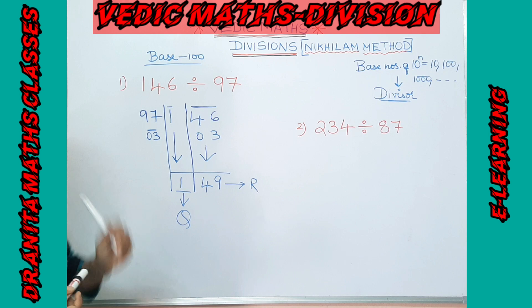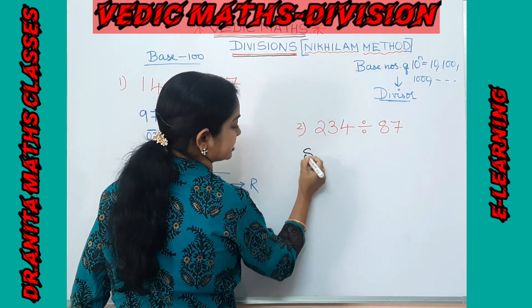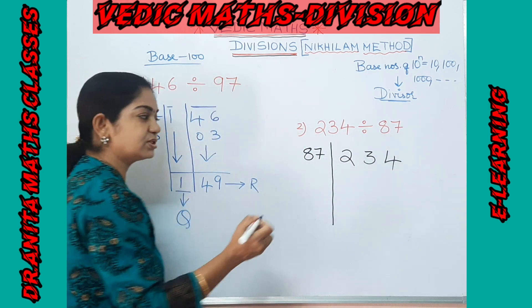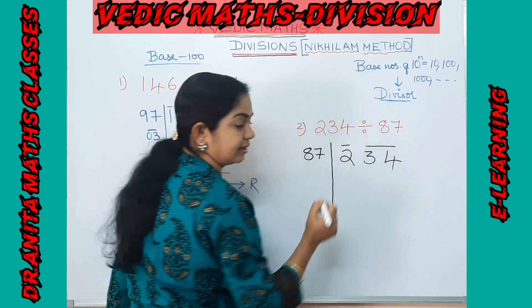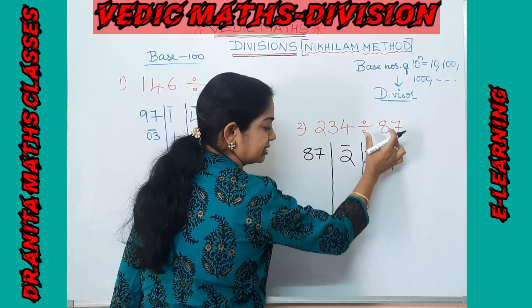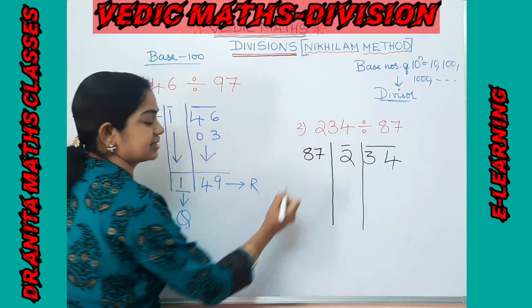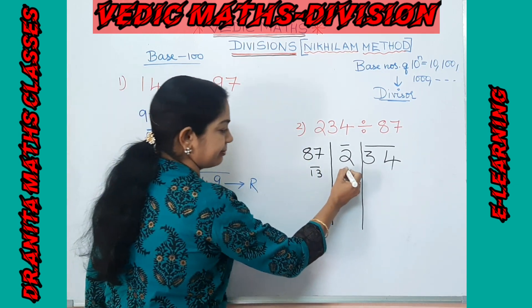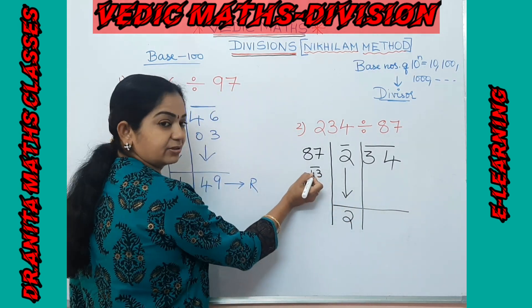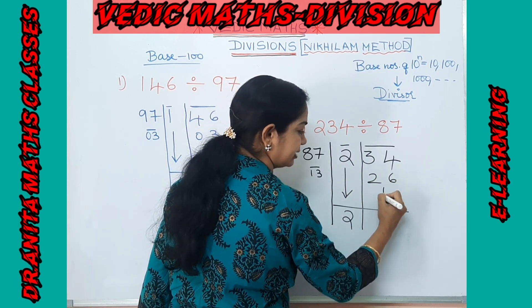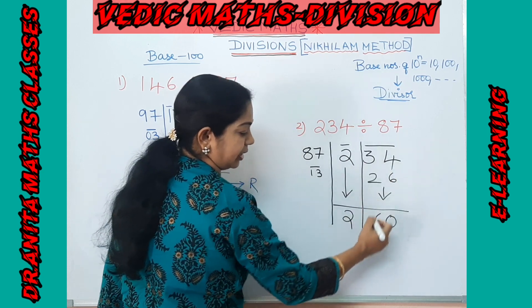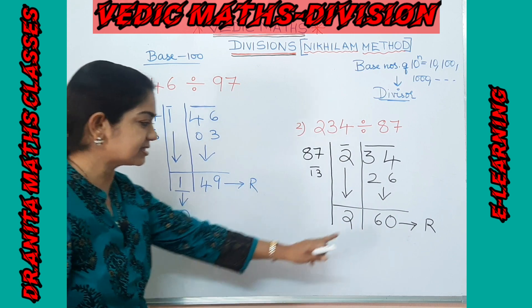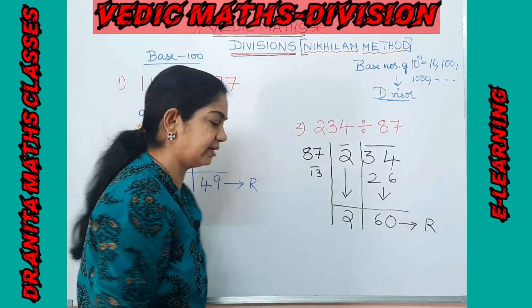Next example: 234 ÷ 87. Since 87 is near base 100, partition two digits from the right. The complement of 87 is 13. Drop the first digit as it is: 2. Multiply 2 by 13 to get 26, add to the next group: 34 + 26 = 60. Since 60 < 87, this is the final remainder. The quotient is 2 and the remainder is 60.